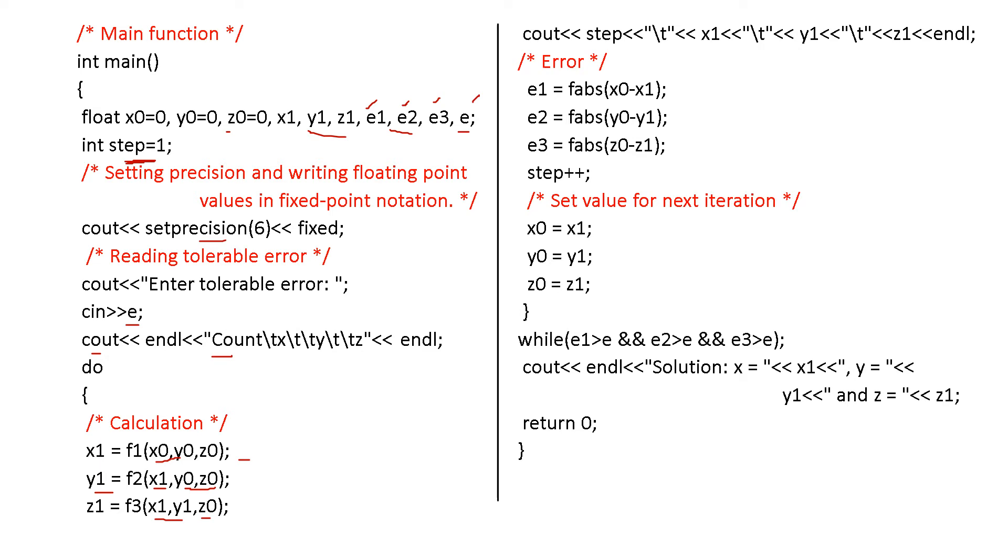Here, again, cout, step. That is, iteration. First iteration, second iteration and so on. The step is there. And then, slash t, tabular form. Table form you have to get. Tab format. And then, x1 value. Again, tab, y1 value. And then, z1 value. This is for printing.